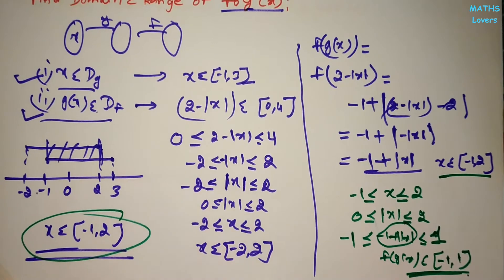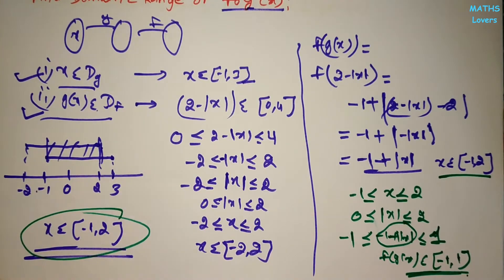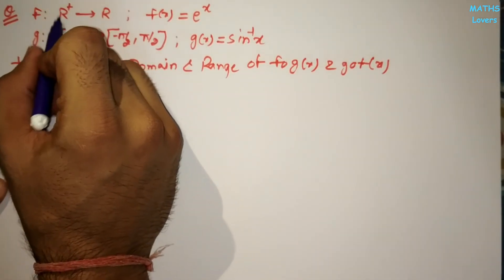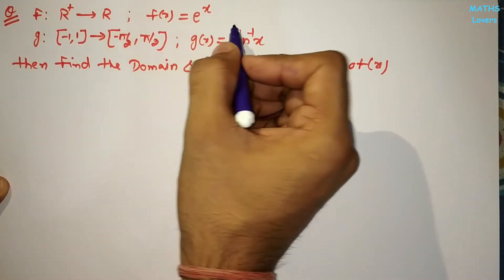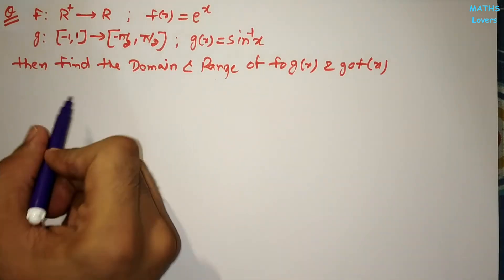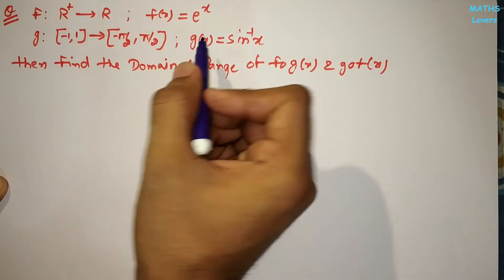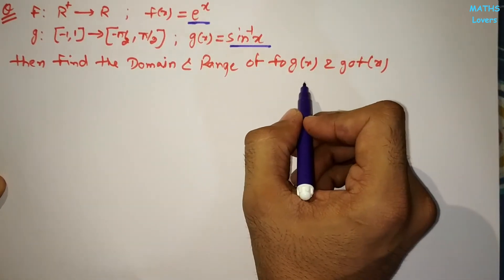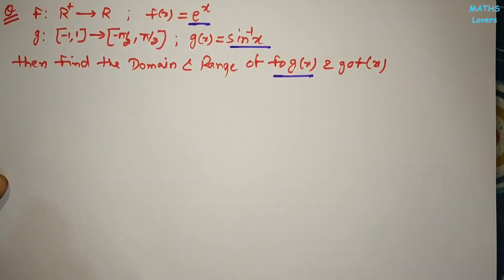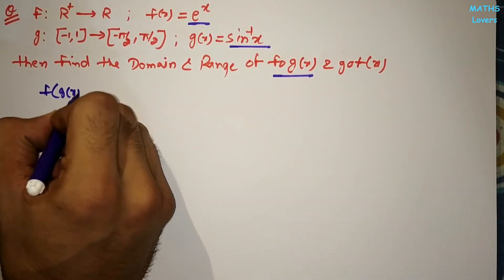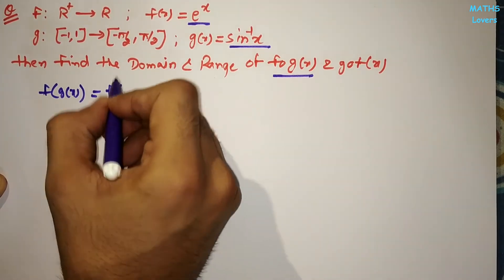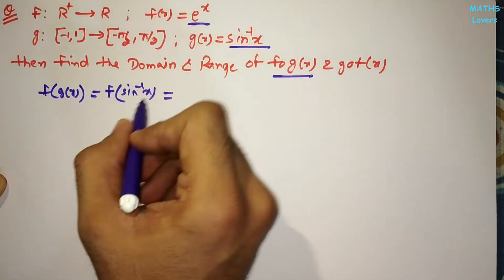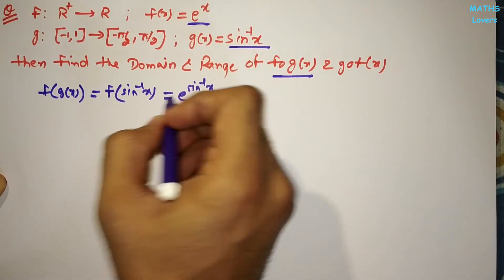This is how we find the domain and range of a composite function. Let's solve the second problem. Function f is defined from positive real numbers to real numbers and f(x) = e^x. Function g is defined from [-1, 1] to [-π/2, π/2] and g(x) = sin⁻¹x. We need to find the domain and range of f∘g and g∘f. For f(g(x)), we replace x in f(x) with sin⁻¹x, giving f(g(x)) = e^(sin⁻¹x).